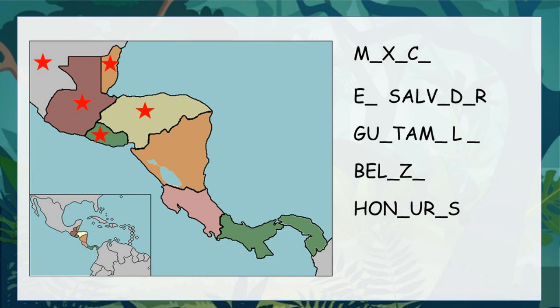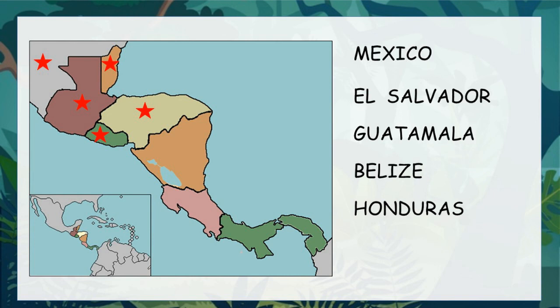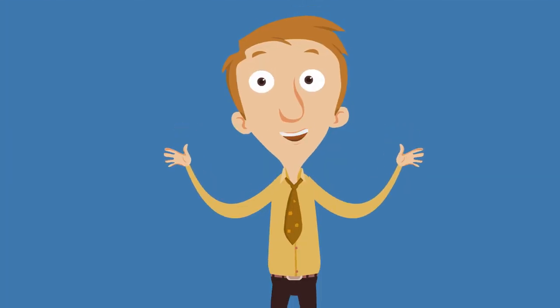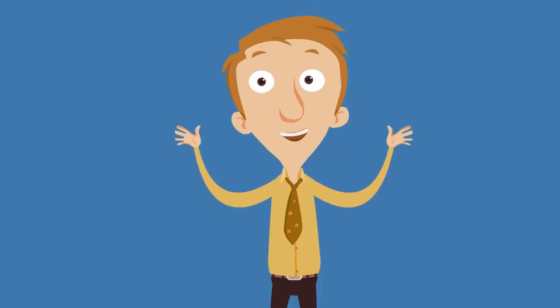Now that was hard! The five countries that the Mayans used to live in are Mexico, El Salvador, Guatemala, Belize, and Honduras. All of these countries are home to tropical rainforests as well.